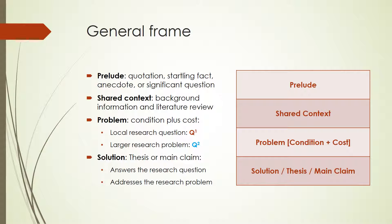Writers usually style the problem as a question, for a problem is a big, significant question or debated issue that target readers care about. Fourth, the solution, also called the thesis statement or main claim, proposes an answer to the problem. In the research essay, the thesis answers two questions: the local research question and the larger research problem. So the two-part thesis statement asserts a local interpretation and a larger solution or position, thus answering the research question and research problem.